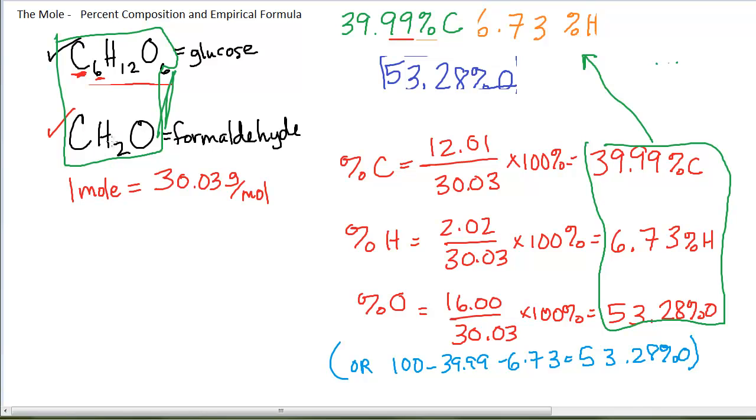Do you notice that this formula is simply the reduced formula of glucose? The formula for formaldehyde is the reduced formula for glucose, which means that you will have exactly the same percentage of carbon, hydrogen, and oxygen because you have the same ratio of those elements.